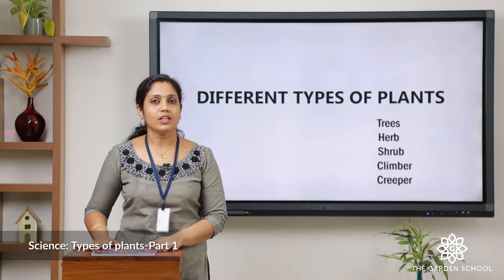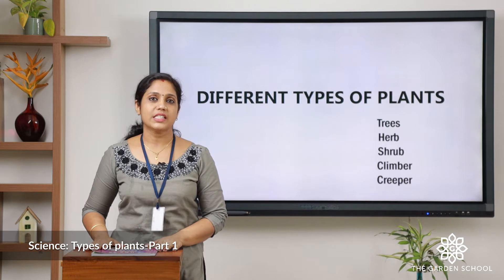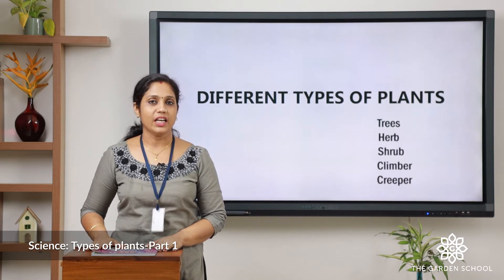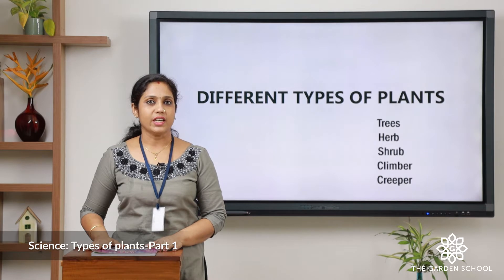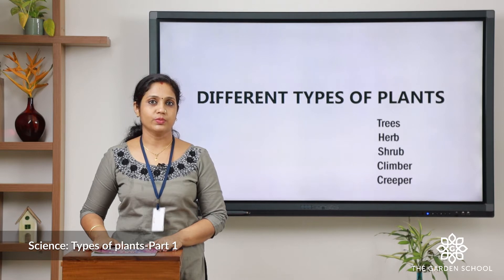What are the different parts of a plant? Stem, root, leaf, flower, fruit, seed. These are the different parts of a plant and we learned about their different functions also.